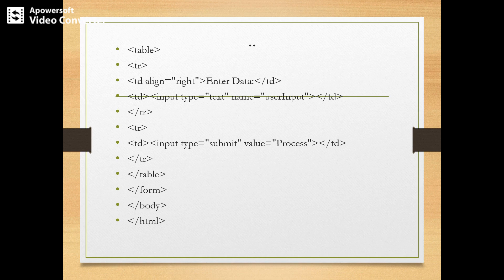The TD input type text with name user-input creates a cell which is an input field where the user can enter input. This is indicated by the input tag, which has two attributes: name and type. The type attribute specifies the type of input — here we have text, which means plain text. Other possibilities include password, which makes the entry unreadable on screen, to be covered in a later chapter.